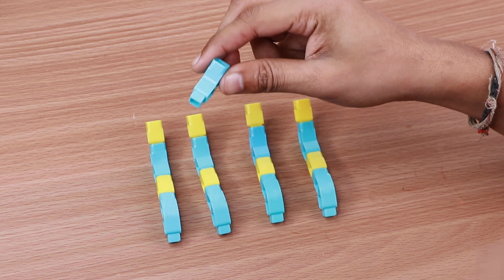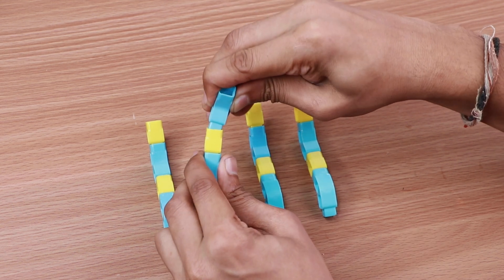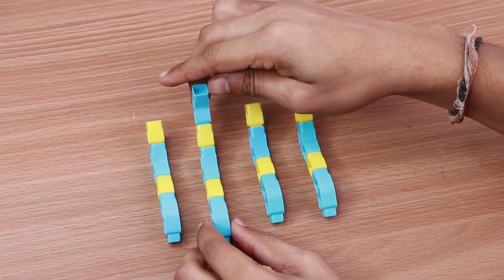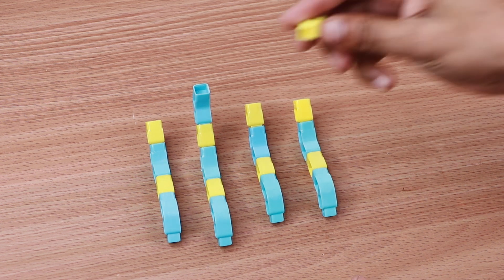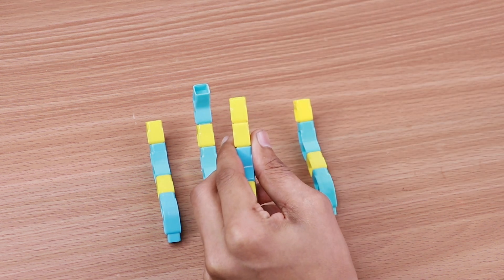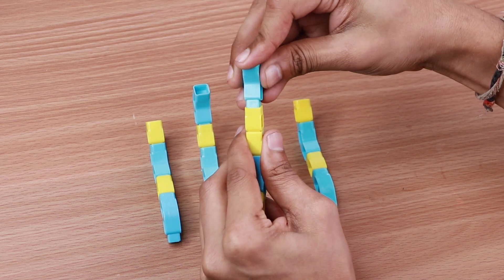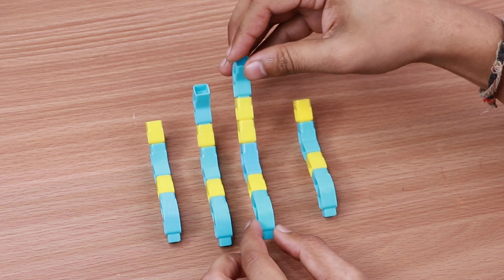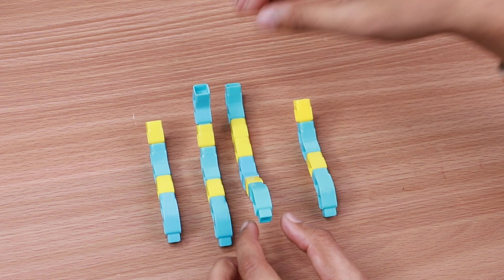Attach 1 2-hole elbow to the 2nd finger and 1 1-hole beam to the 3rd one. Attach a 2-hole elbow to the 3rd finger and also to the 4th finger.